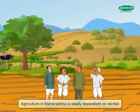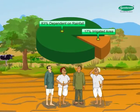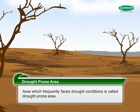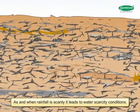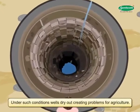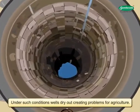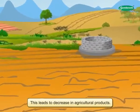Agriculture in Maharashtra is totally dependent on rainfall. Only 17% of the area is irrigated and 83% of the area is depending on rainfall. The area which frequently faces drought conditions is called a drought-prone area. When rainfall is scanty, it leads to water scarcity — wells dry out, creating problems for agriculture and leading to a decrease in agricultural products.